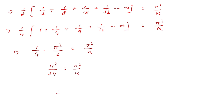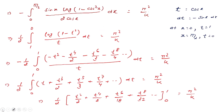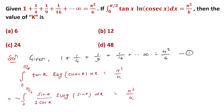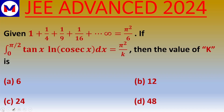Therefore the value of k is 24, and the correct option is option C. Hope you understood it well. Thank you.